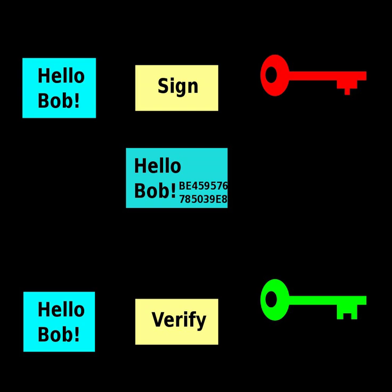A digital signature scheme typically consists of three algorithms. A key generation algorithm that selects a private key uniformly at random from a set of possible private keys. The algorithm outputs the private key and a corresponding public key. A signing algorithm that, given a message and a private key, produces a signature.